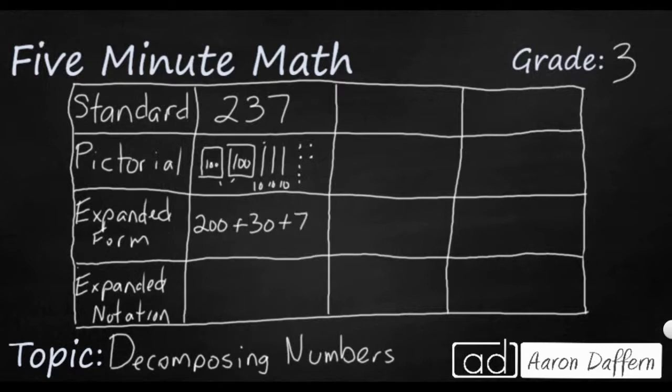Expanded notation is similar, but it's not exactly the same. You write the digit, and you multiply it by its place value. So this two is in the hundreds place. So two hundreds, and then you're going to add. I've got a three in the tens place. I've got three tens. And then you're going to add a seven in the ones place times one. Sometimes you see it with parentheses. You'll learn in fifth grade you don't necessarily need the parentheses, but I'll put them here anyway. So that's expanded notation.